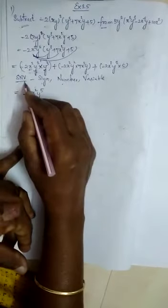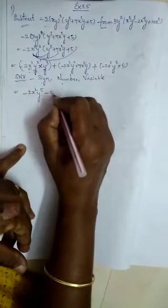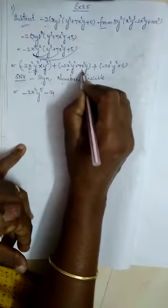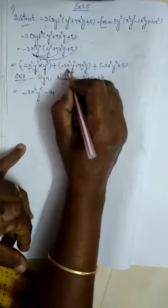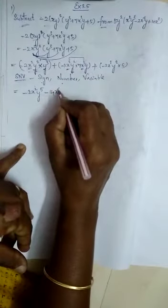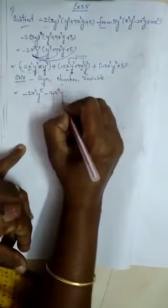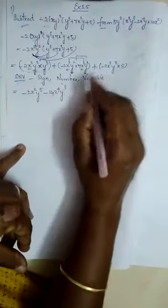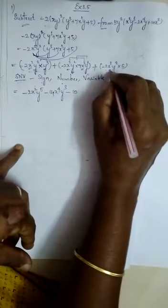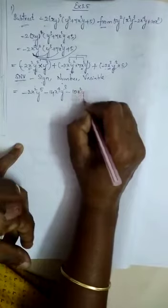For the second arc, follow SNV again: sign — plus into minus is minus. Number — 2 times 7 is 14. Variable — x squared into x squared gives x power 4; y squared into y power 1 gives y power 3. For the third arc: sign — plus into minus is minus. Number — 2 times 5 is 10. Variable — x squared y squared. So the simplified first expression is: minus 2x squared y power 5 minus 14x power 4 y cubed minus 10x squared y squared.